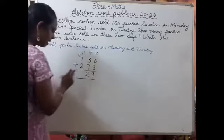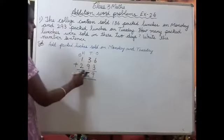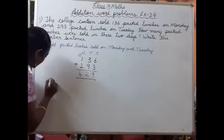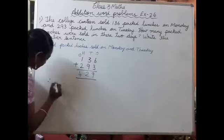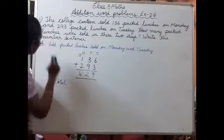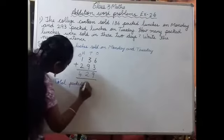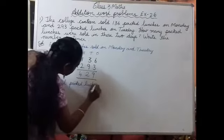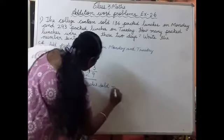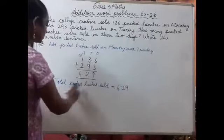One carry. 2 plus 1 will be 3, 3 plus 1 is 4. So 429 packets are sold together. Therefore, total packed lunches sold is equal to 429. This is the sentence.